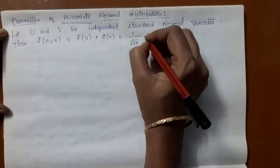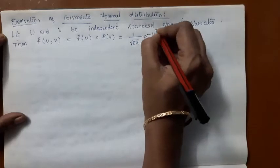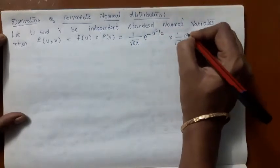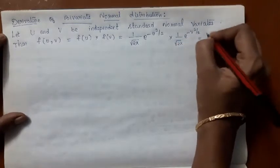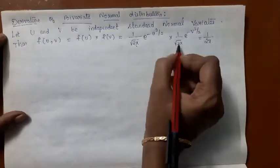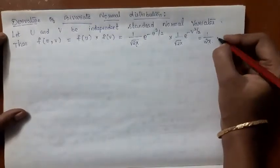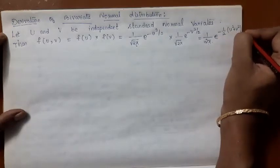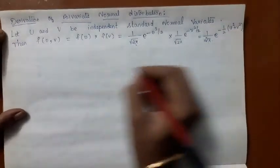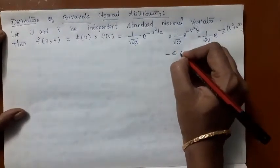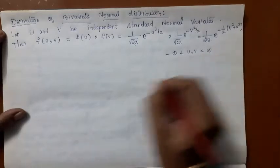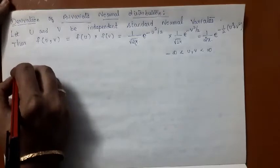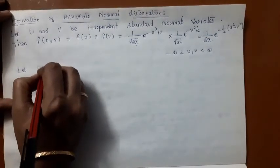So we have (1/√(2π)) · e^(−u²/2) times (1/√(2π)) · e^(−v²/2), which equals (1/2π) · e^(−½(u² + v²)). The range is from minus infinity to plus infinity.